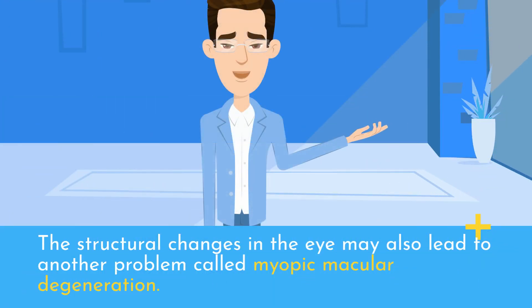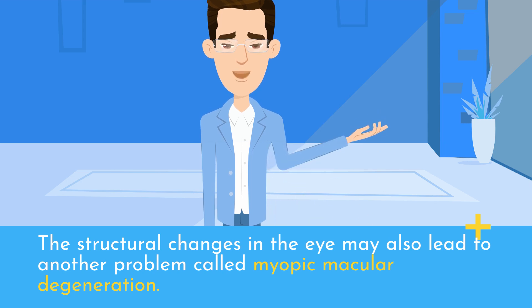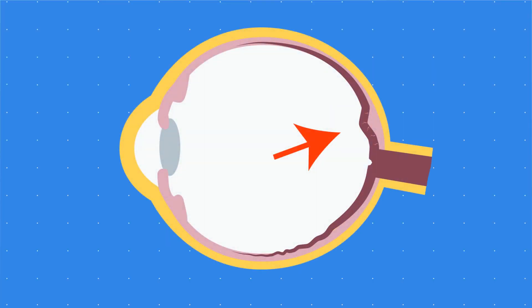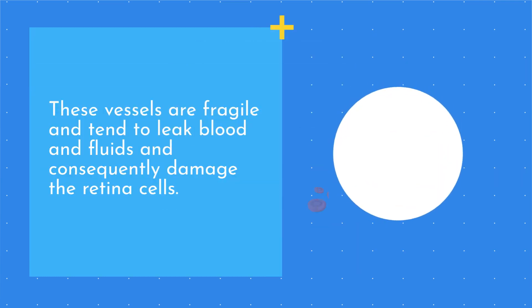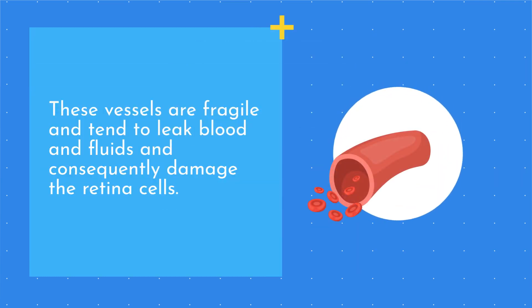The structural changes in the eye may also lead to another problem called myopic macular degeneration. As these changes happen, your eye releases excessive vascular endothelial growth factor, or VEGF, which leads to abnormal blood vessel growth in the macula. These vessels are fragile and tend to leak blood and fluids, consequently damaging the retinal cells.